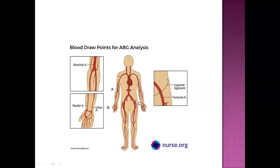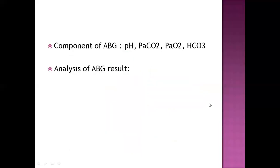The blood draw points for ABG analysis are the radial artery, brachial artery, and femoral artery. Components of ABG include pH, pressure of carbon dioxide (PCO₂), pressure of oxygen (PO₂), and bicarbonate (HCO₃⁻).